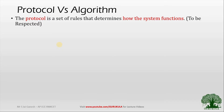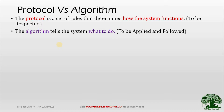On the other hand we have algorithm. The algorithm tells the system what to do — it is the various steps which a system will execute to achieve a particular task. Algorithm is something which has to be applied and followed. In a bird's eye view: algorithm is something that tells you what to do and protocol is something that tells you how to do.